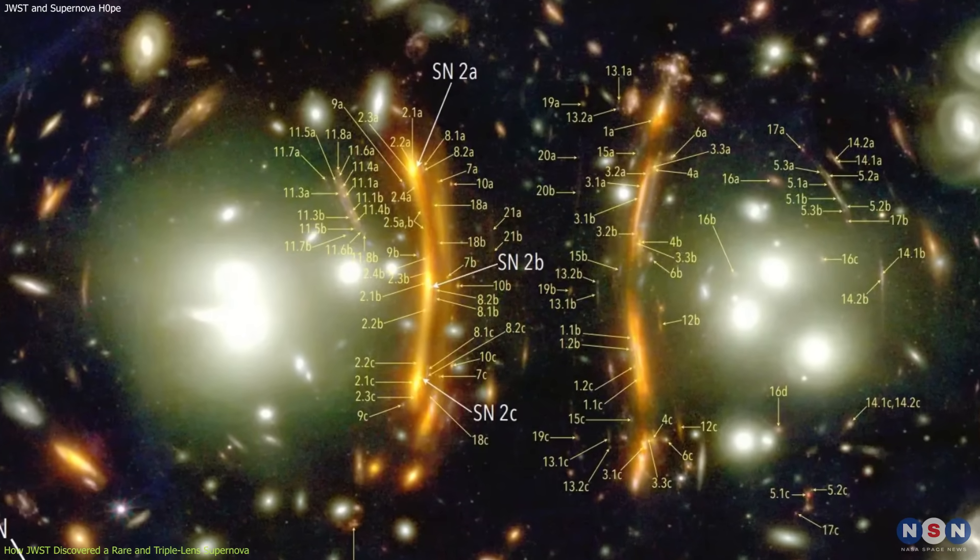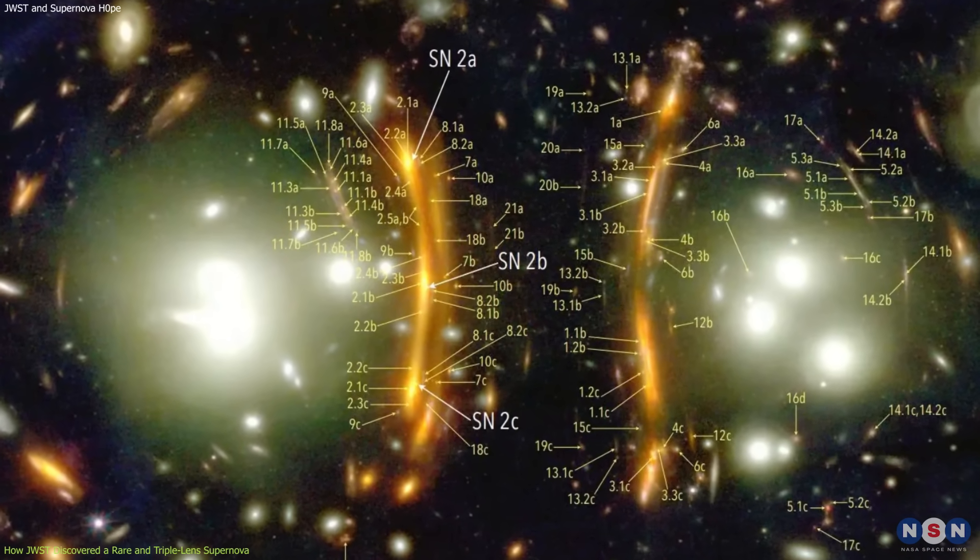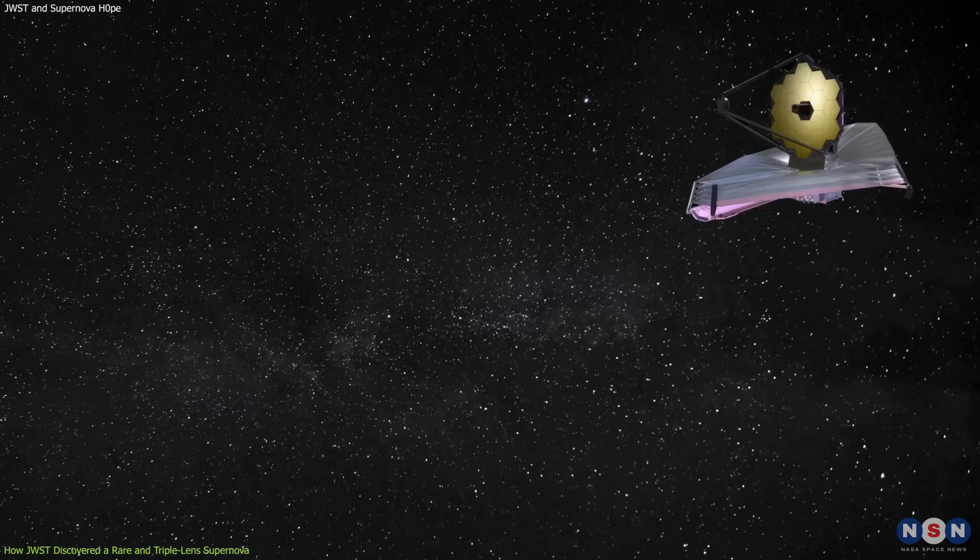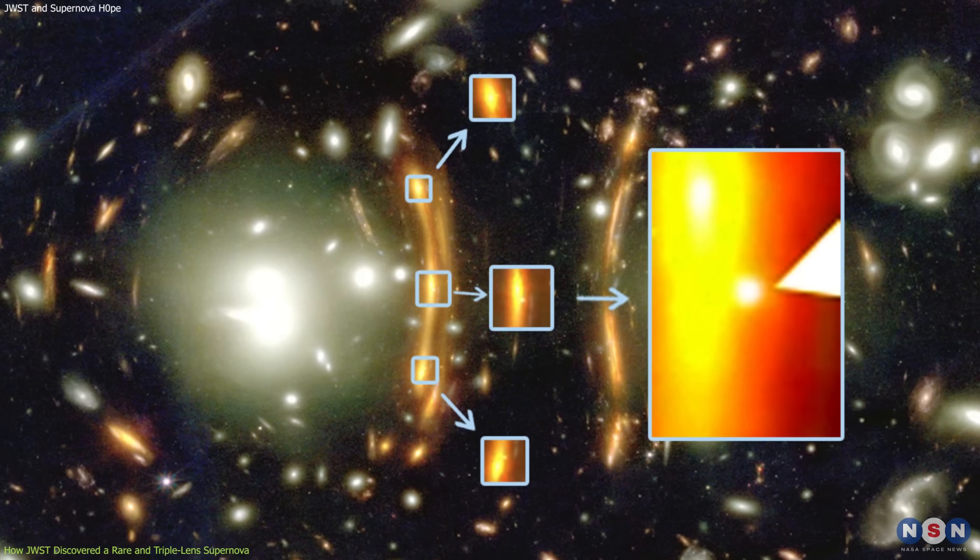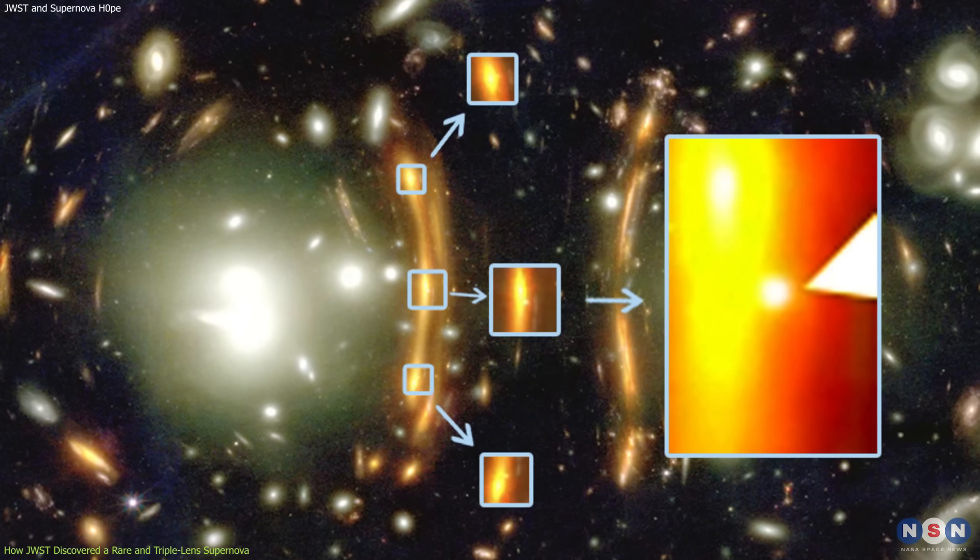But what made this supernova so special was not just its brightness, but also its appearance. When James Webb looked at the images it took, it noticed something very strange. The supernova appeared in three different places in the same image.